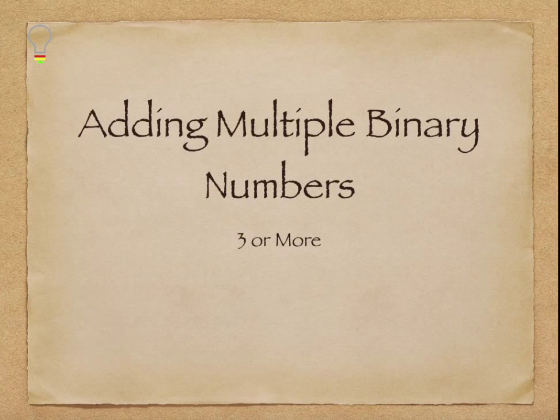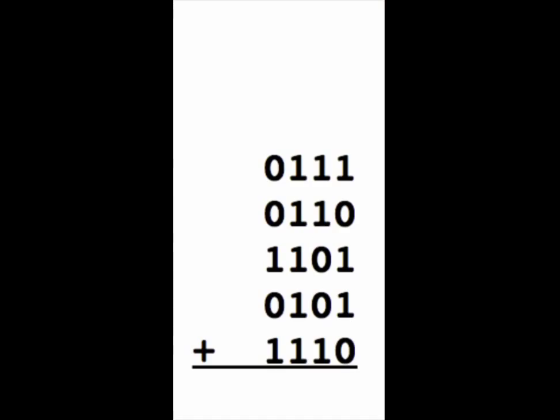Adding multiple binary numbers uses the same principles as adding two binary numbers, but we will approach it using a slightly different method. First, we add the numbers in the rightmost column.